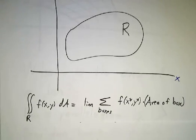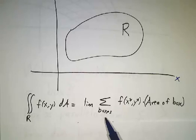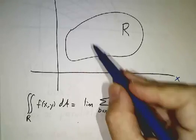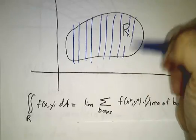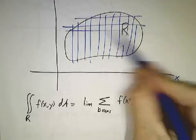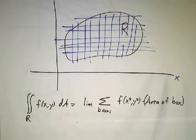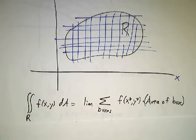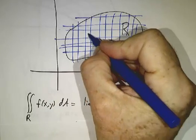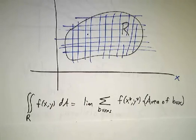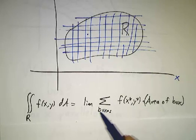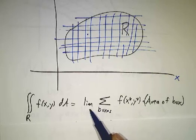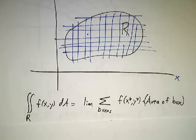We know that the integral of f dA, by definition, is what we get when we take this region and chop it up into little boxes. We chop it up into little boxes, evaluate the value of the function at a point in each box, multiply by the area of the box, add them all up, and that gives a pretty good estimate. Then we take the limit as we chop things into smaller and smaller boxes.